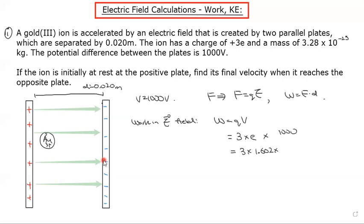And the charge of an electron you can look up. So when you multiply that all together, that will be a work in joules, and that would go into the 4.81 times 10 to the negative 16 joules.